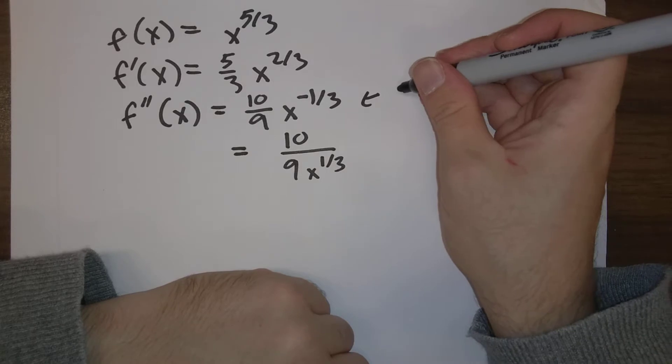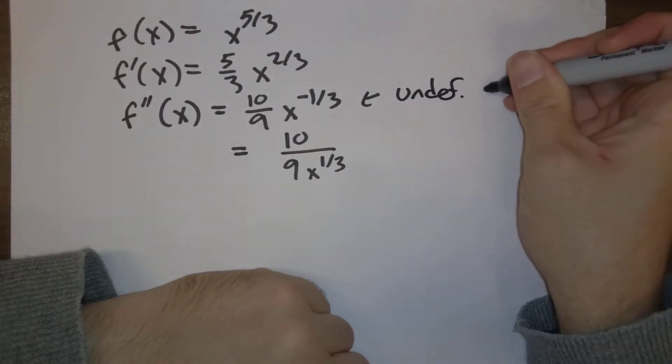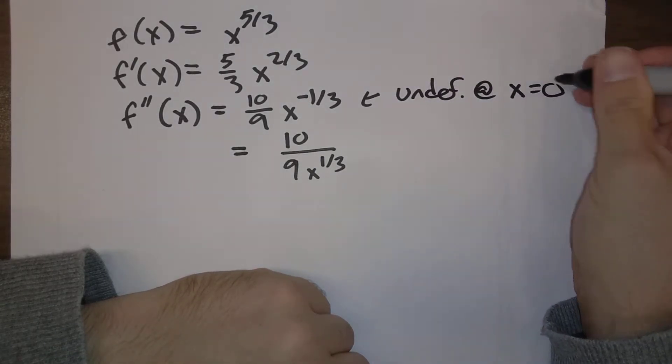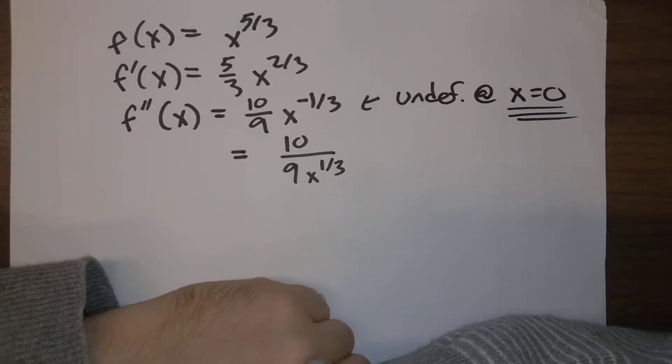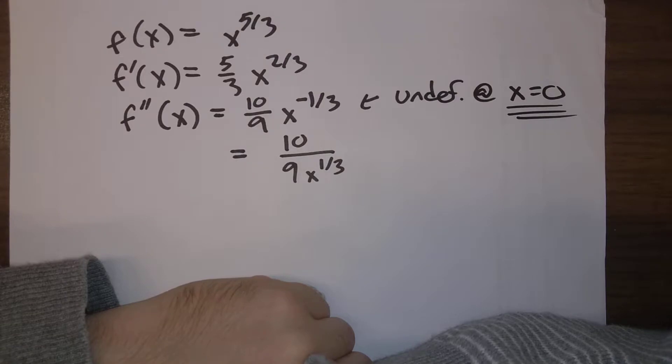but this is undefined at x equals zero. And so x equals zero, that's a potential inflection point.